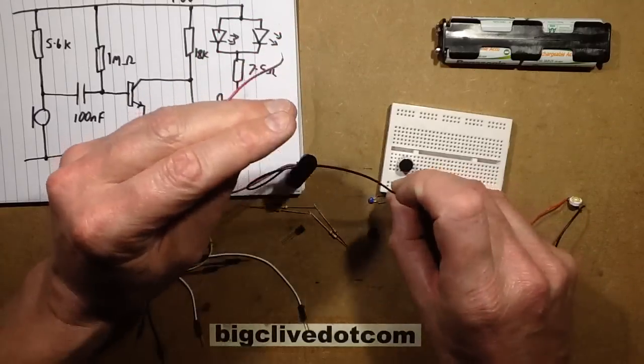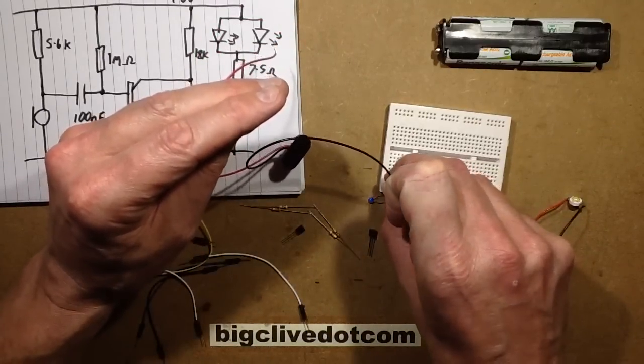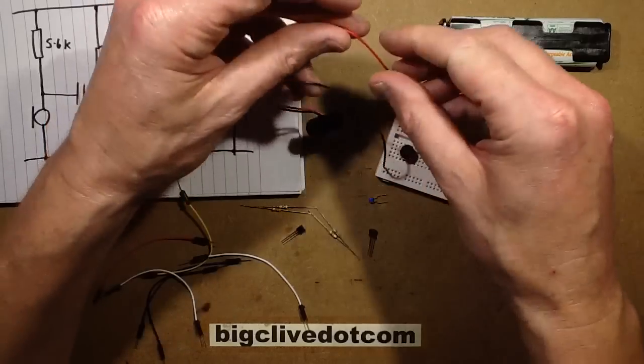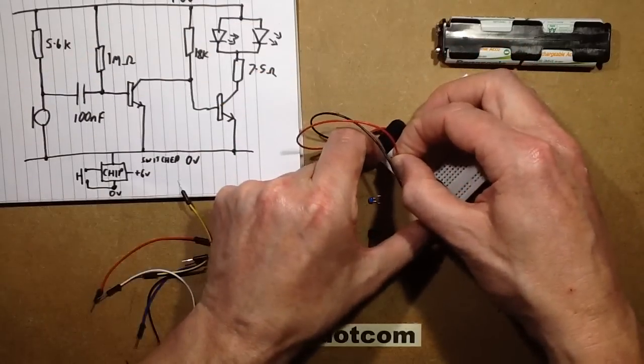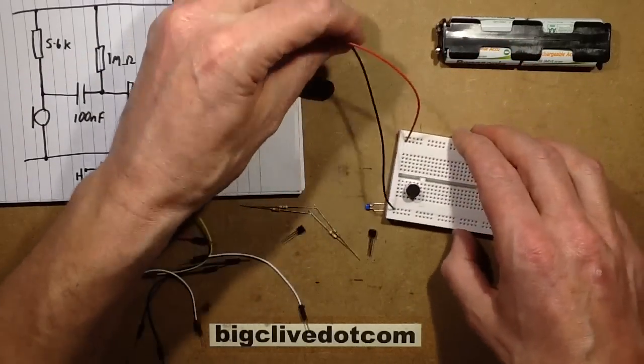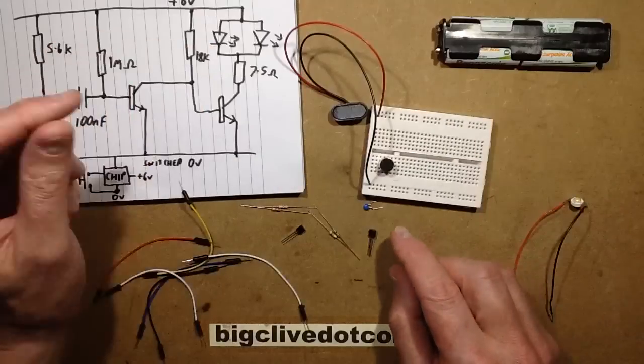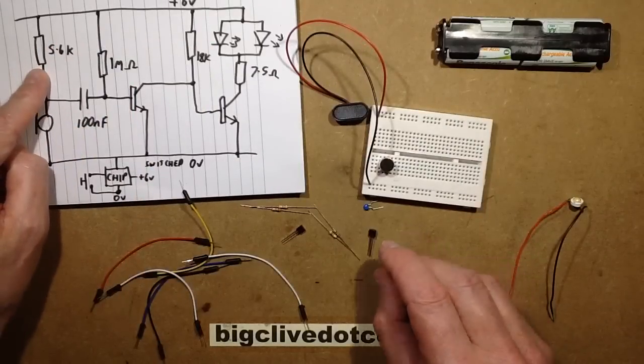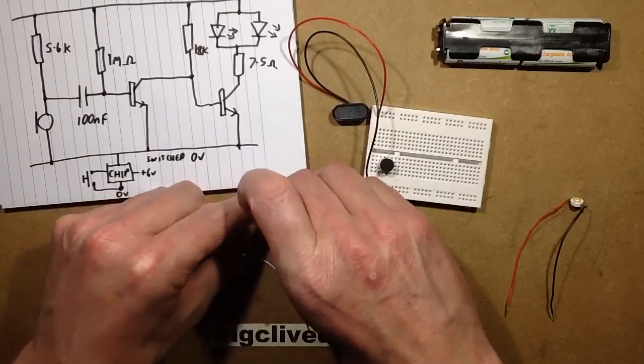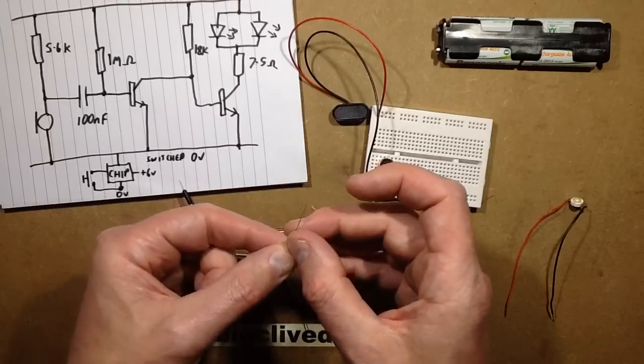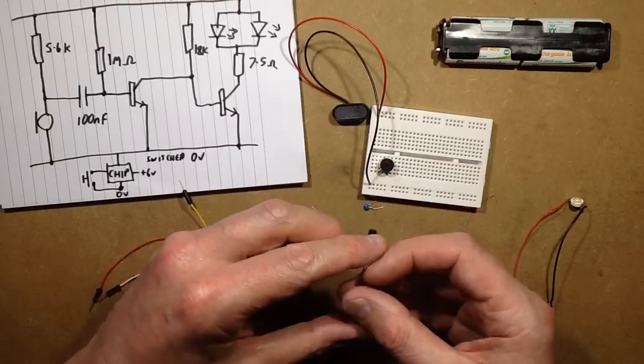Let's plug this into one of the bus bar rails along the bottom. This is the negative and this is the positive. Next I'm going to put in the 5.6k resistor. So that's green, blue, red - green, blue and two zeros which is 5.6k.